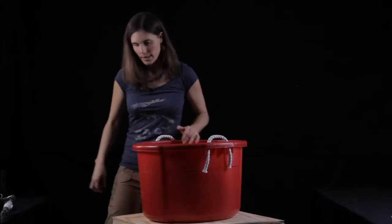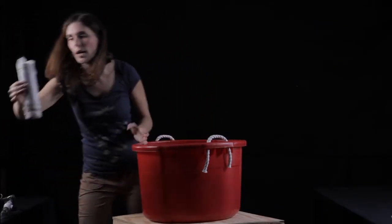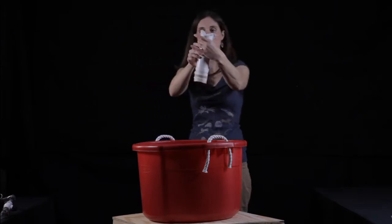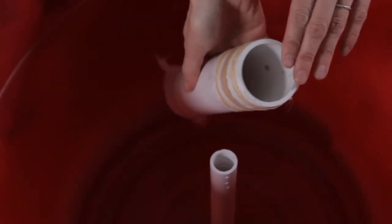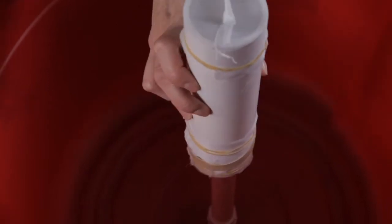Then you'll want to take the stand pipe, that's the piece of two-inch PVC that's got netting over it, and put that down over the stand pipe in the middle.